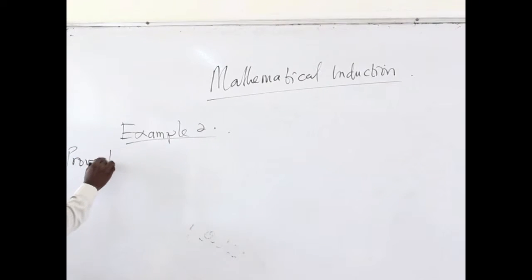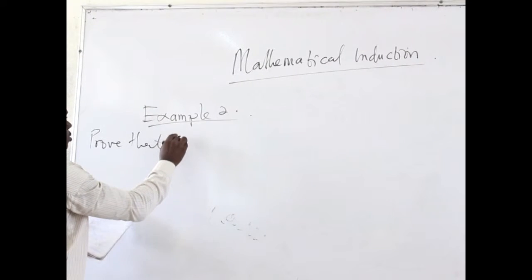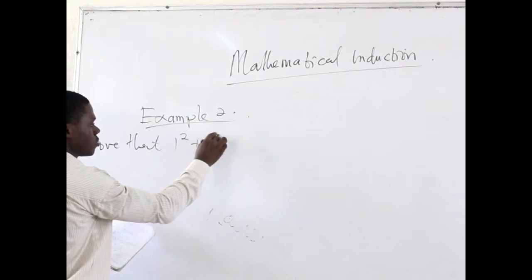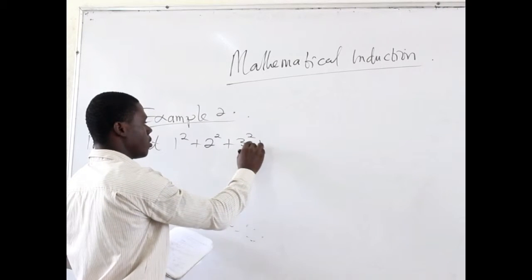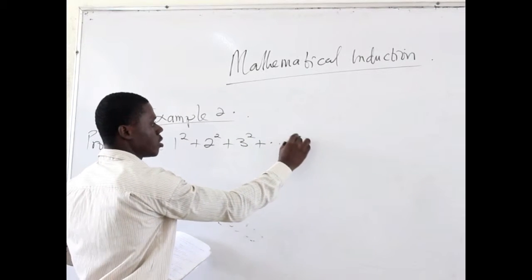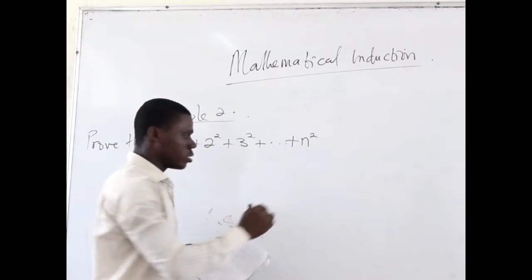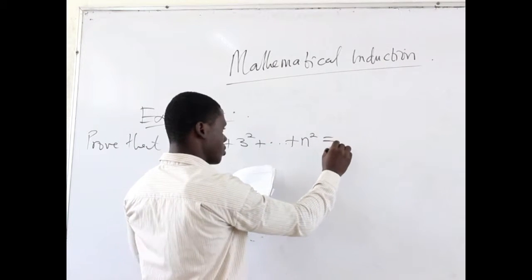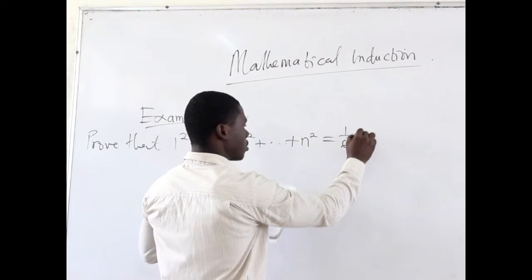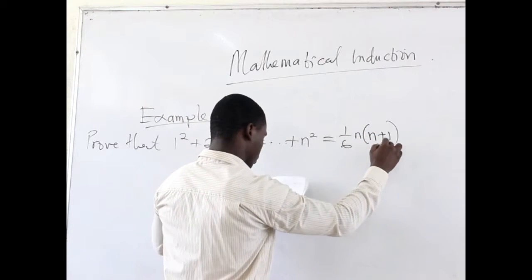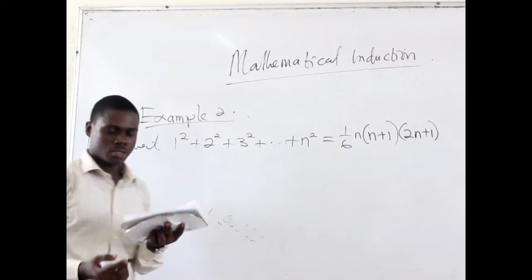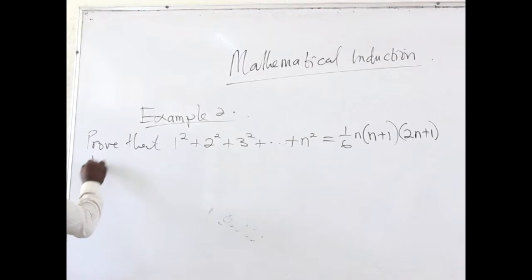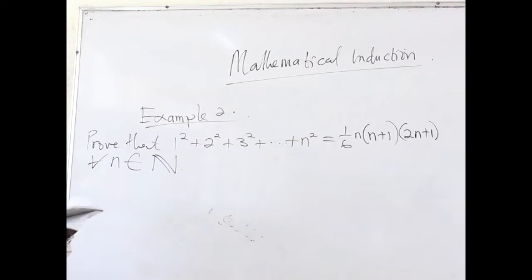Here is the question. We are proving that 1 squared plus 2 squared plus 3 squared, continuing up to n squared, is equal to (1/6) · n · (n+1) · (2n+1). We are doing this for all n belonging to the set of natural numbers.